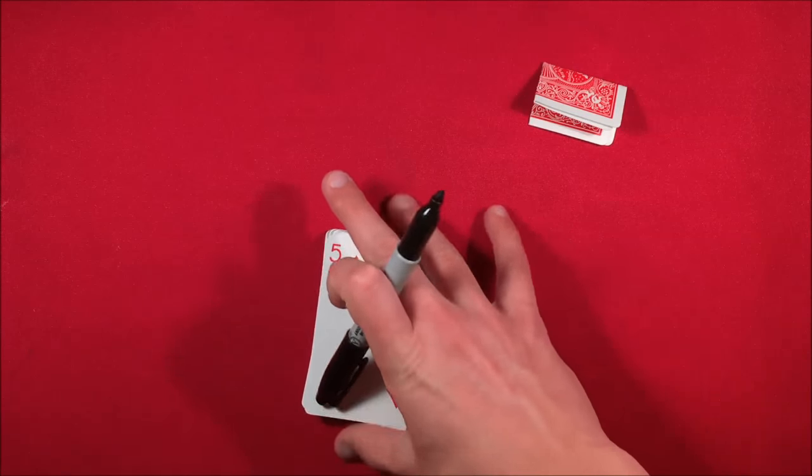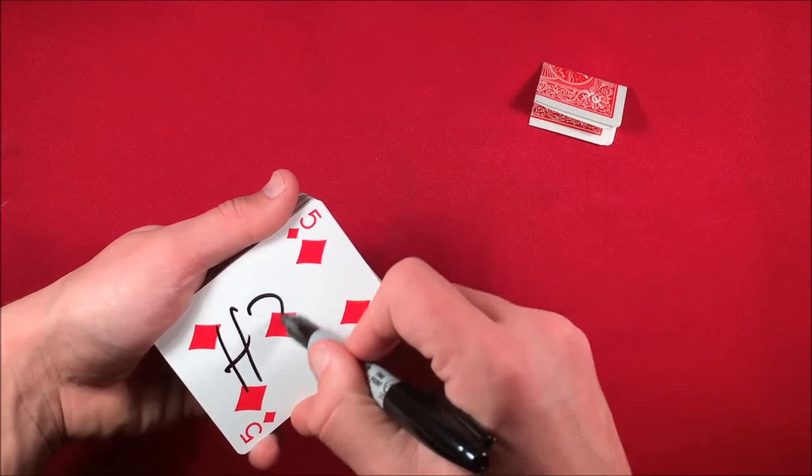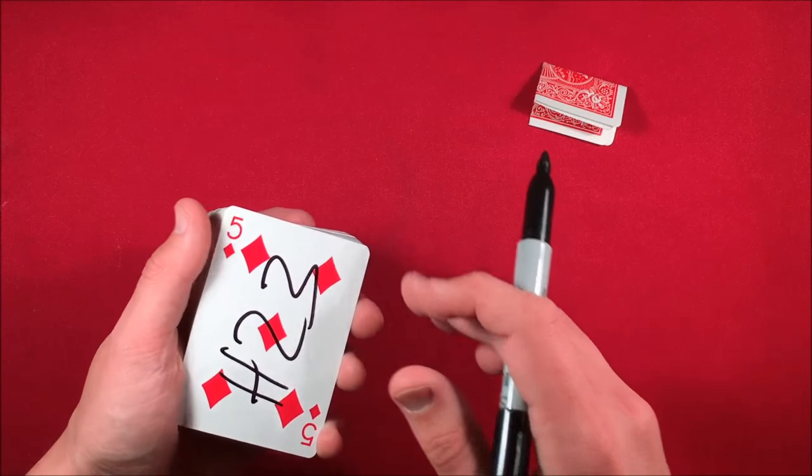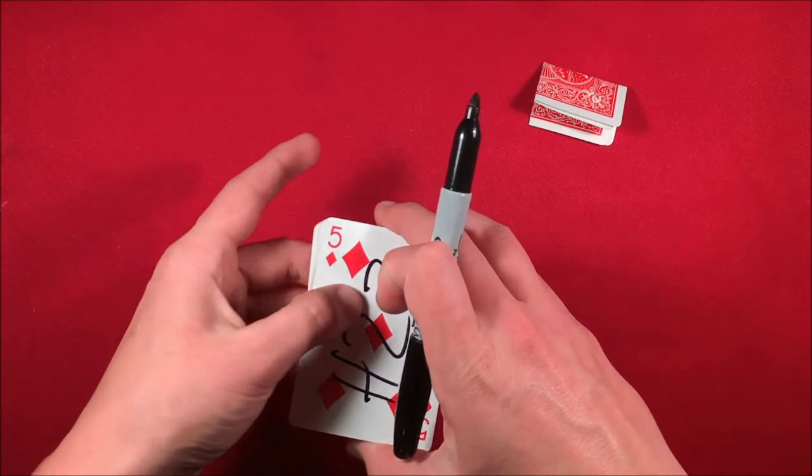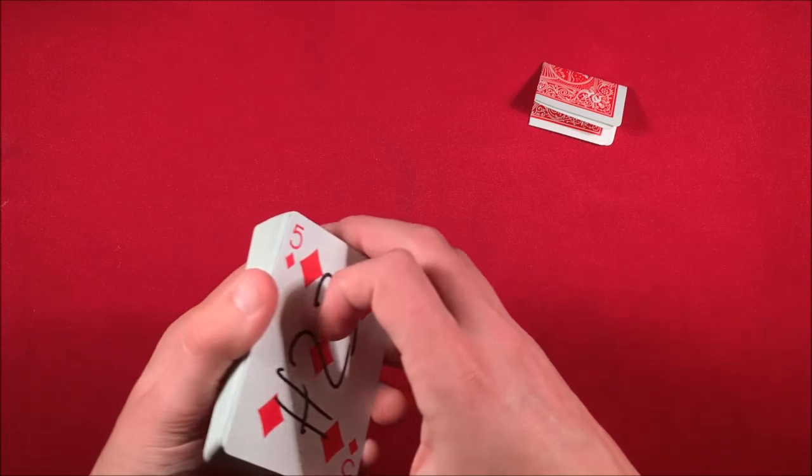So what you do here, and I'll leave a link up on the screen for the double lift, is you sign their card, or you sign your own card, and you make the signature the exact way that you did before. And the spectator isn't going to be paying so much attention to this card, so it isn't really that big of a deal if you don't match it perfectly.